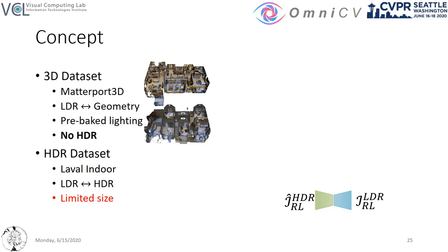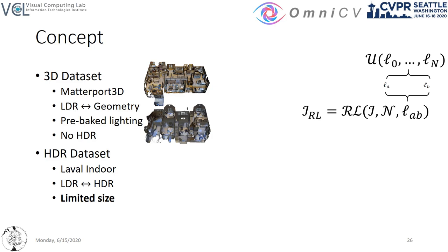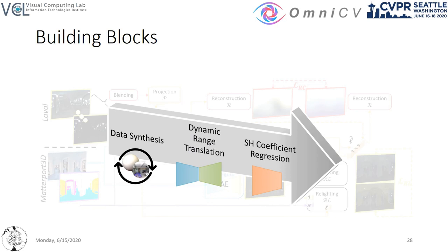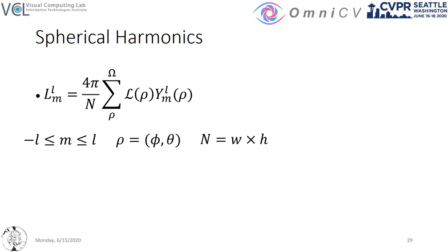We use an autoencoder to translate the relit Matterport 3D images to the HDR domain prior to regressing their lighting. Finally, in order to overcome the limited pool of available HDR lighting maps, we blend uniformly sampled HDR maps, increasing the variance of our synthesized relightings. Our model's building blocks comprise data synthesis, dynamic range translation, and spherical harmonics coefficients regression. Spherical harmonics transform any signal to the frequency domain in spherical coordinates, as the Fourier transform does in Cartesian.